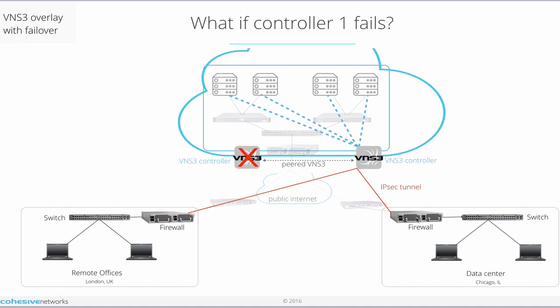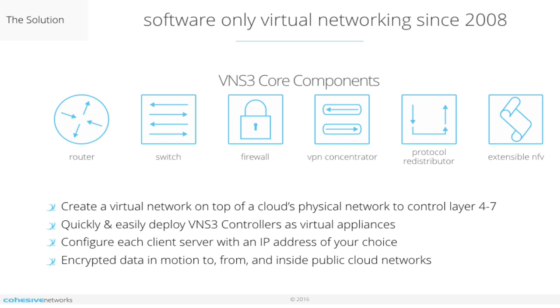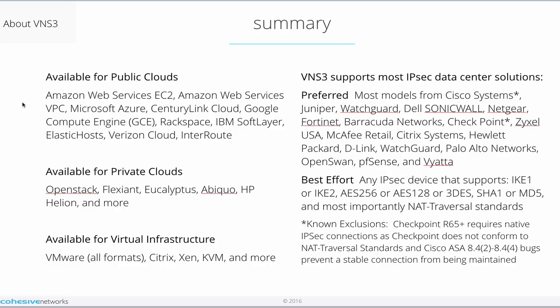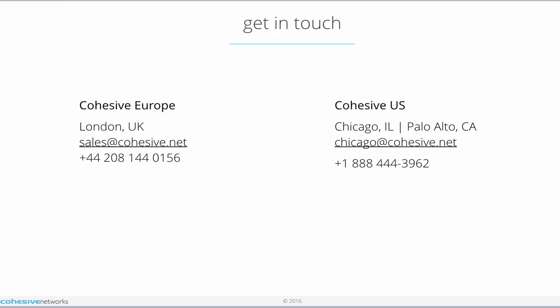Hopefully your IPsec endpoint will create the peer list and should have its own IPsec failover. So in summary, VNS3 acts as a virtual router switch, firewall, protocol redistributor, VPN concentrator, and extensible NFV. For further information, please check our support documentation. VNS3 is available in most public clouds, private clouds, and virtual infrastructure, and does support most IPsec-based data center endpoint solutions. Make sure to get in touch with any questions. You can email us at sales@cohesive.net, chicago@cohesive.net, or if you're having trouble, support@cohesive.net.